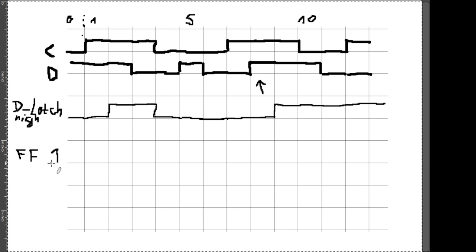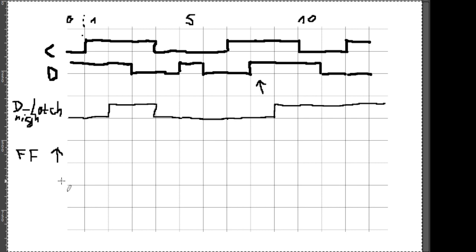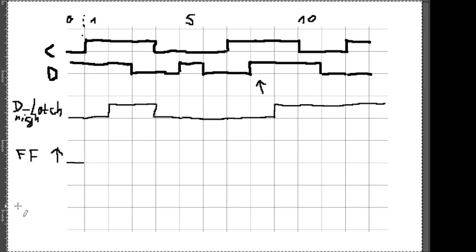Es gibt auch das Gegenteil: wenn das Taktsignal von 1 auf 0 geht, ist das die Falling Edge, oder auch Rückflanke. Wir haben hier aber ein vorderflankengesteuertes Flipflop, also geht es um die Rising Edge. Immer da, wo unser Taktsignal von 0 auf 1 geht, schauen wir, ob wir etwas ändern wollen. Wenn ich auch hier im Vortakt mit 0 anfange – in welchem Taktübergang haben wir das erste Mal eine Rising Edge auf dem Taktsignal?